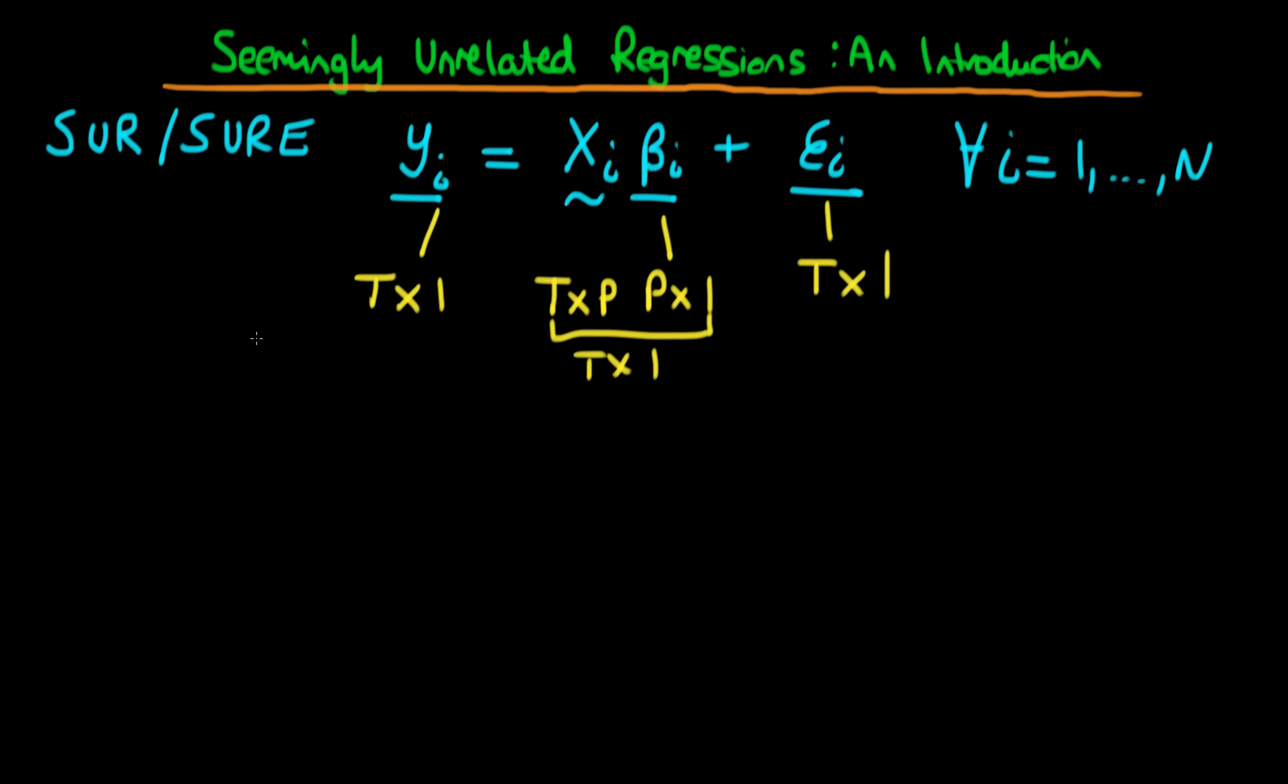Furthermore, we assume that within each individual that we have a satisfaction of the Gauss-Markov conditions. So we have the expectation of E_i, the vector E_i, is equal to zero. And we also assume that the expectation of E_i times E_i prime, in other words, the variance of our error given X_i, is equal to